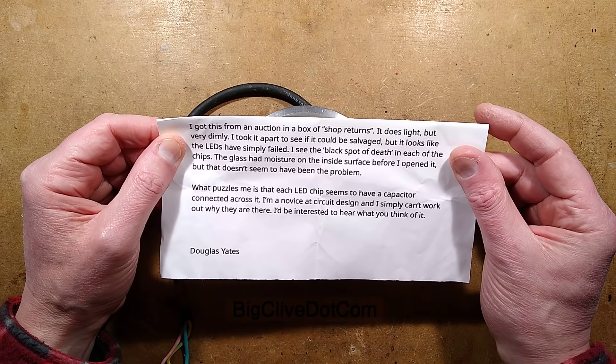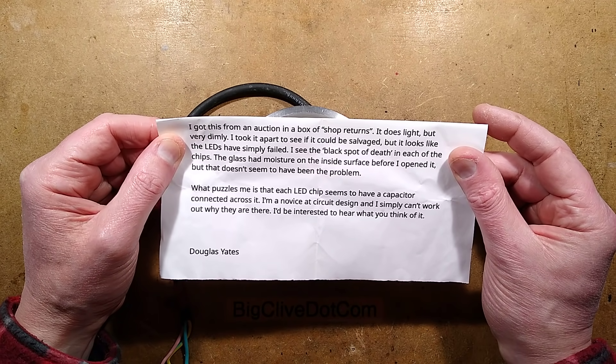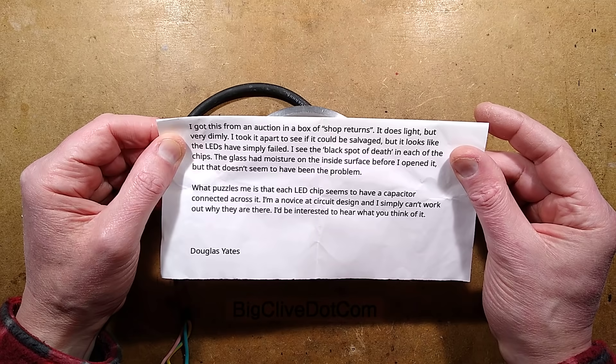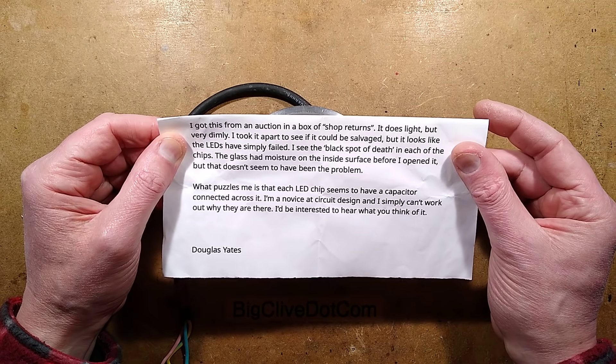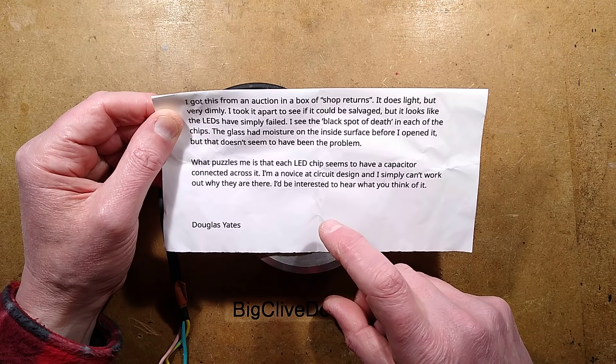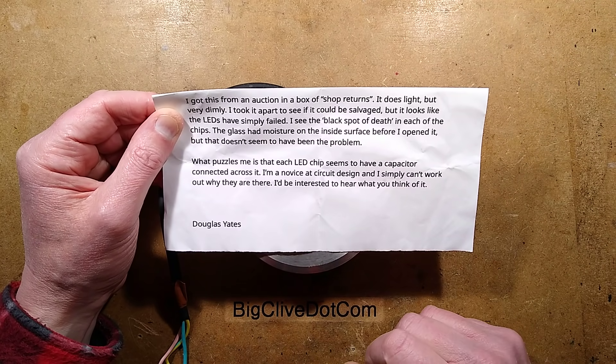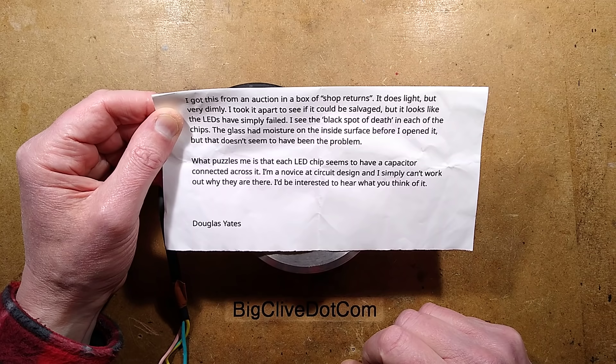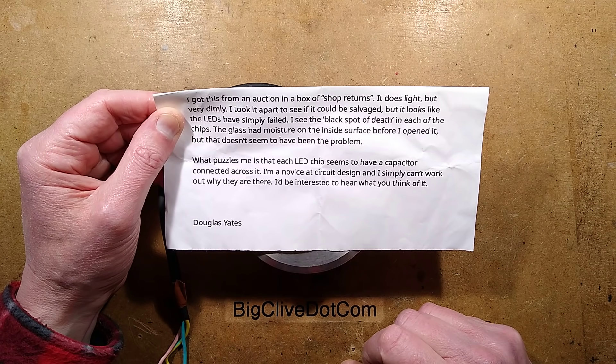The glass had moisture on the inside surface before I opened it, but that doesn't seem to have been the problem. What puzzles me is that each LED chip seems to have a capacitor connected across it. I'm a novice at circuit design and I simply can't work out why they're there. I'd be interested to hear what you think of it.